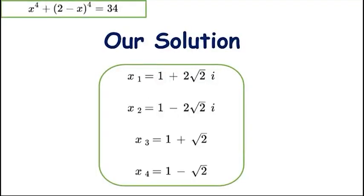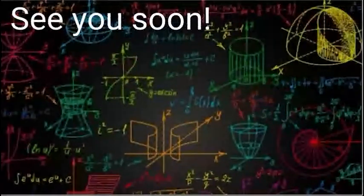Thus our four solutions to the quartic equation are: x₁ = 1 + 2√2·i, x₂ = 1 − 2√2·i, x₃ = 1 + √2, and x₄ = 1 − √2. I hope you enjoyed this video — thanks for watching and see you again soon on the next exciting video.